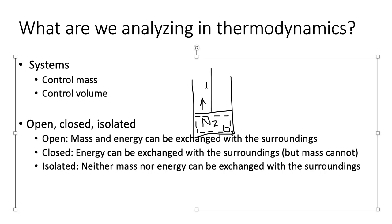Although this might seem redundant, you have to know what you're analyzing. Anytime you apply a law of thermodynamics, you have to pick a system and pick it in a way that helps you solve the problem at hand. Systems are either a control mass or a control volume; you can describe them as open, closed, or isolated; and you have to define the system clearly so that you can actually do thermodynamics.